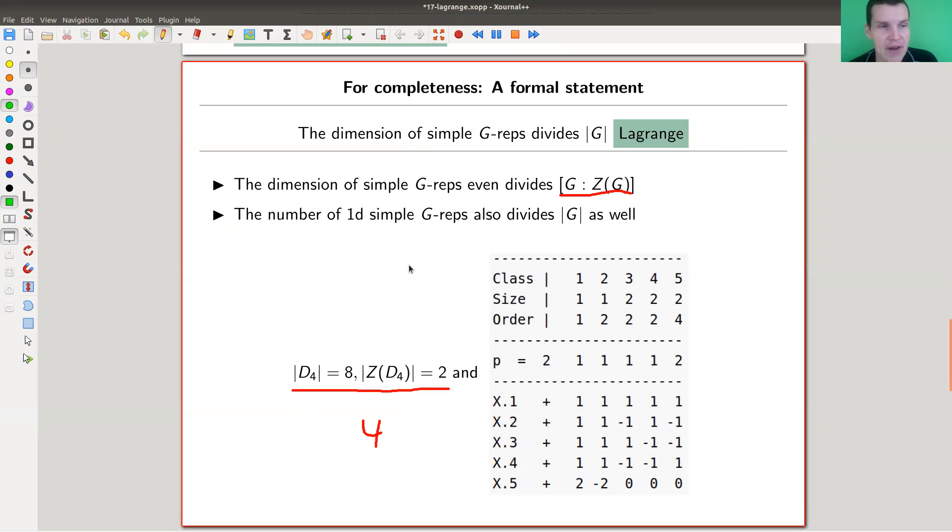And as a kind of nice fact here, a version as well. The number of one dimensional representations also divides the order of the group. So here again we have eight, and we have indeed four one dimensional representations, divides nicely in the order of the group. So kind of everything divides nicely everything, which is kind of a cool statement.